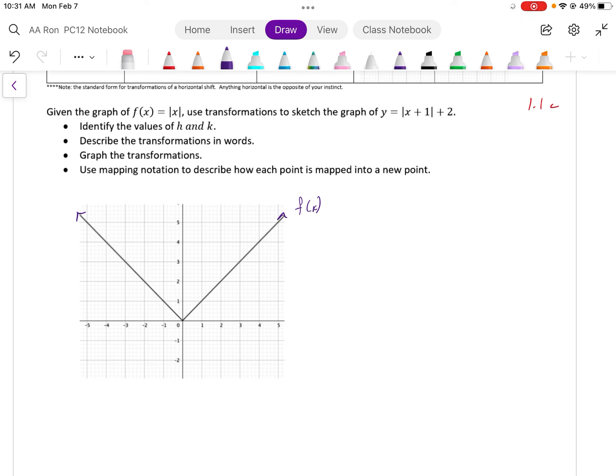I'm going to just go through this list here and identify h and k. The value of h is equal to negative 1. The value of k is 2. Now, I got that negative 1 from here, and I got that k of 2 from what is being added to my function.